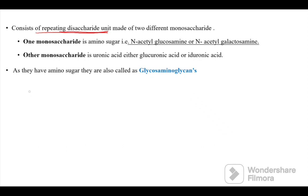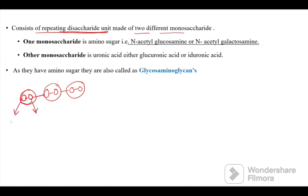Heteropolysaccharides are made of many sugar units, and those sugar units are disaccharide units. A disaccharide is made of two sugar units, so heteropolysaccharides are made of repeating disaccharide units which are composed of two different monosaccharides — one type and another type of sugar unit.